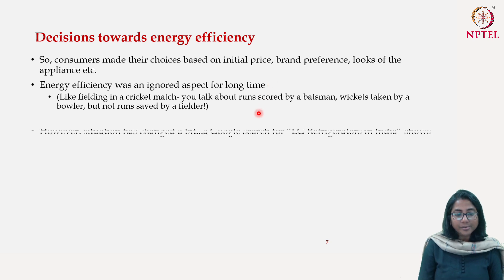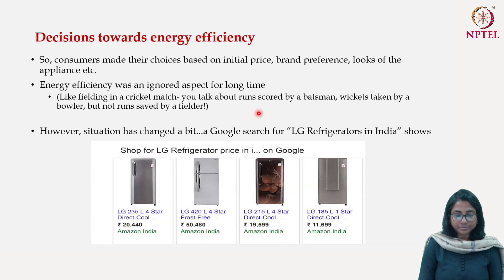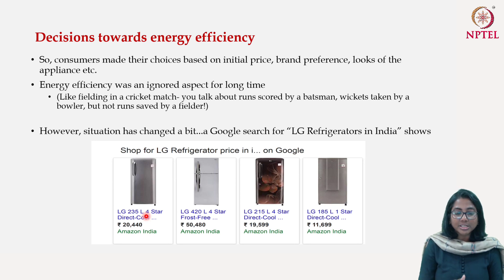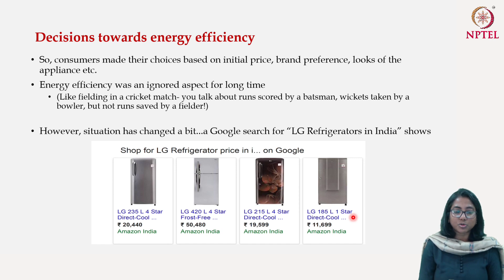Things have changed a little bit. A Google search for LG refrigerators in India shows different models listed alongside their star ratings — four star, four star, one star — as the second most important information. So when a consumer looks at this, alongside size, price, and brand, they are also bound to notice the star rating. It gives the consumer information about the energy intensity of these refrigerators and which is more efficient. Seeing four-star versus one-star, you are forced to factor in energy efficiency in your decision.